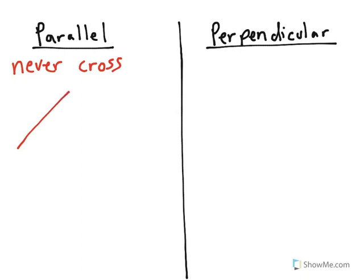So, for example, these two lines here will be parallel. See how if they were to keep going forever and ever, they would never cross each other.